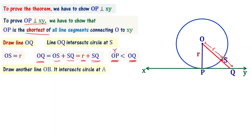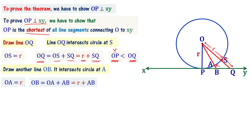Let me draw another line OB. This line intersects the circle at point A. OA is equal to the radius of the circle. OB is equal to OA plus AB, which equals R plus AB. Therefore OB is greater than R, meaning OB is greater than OP.